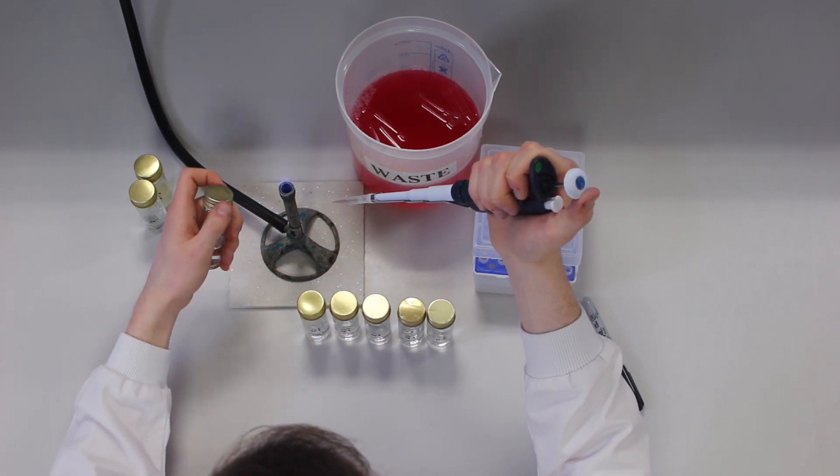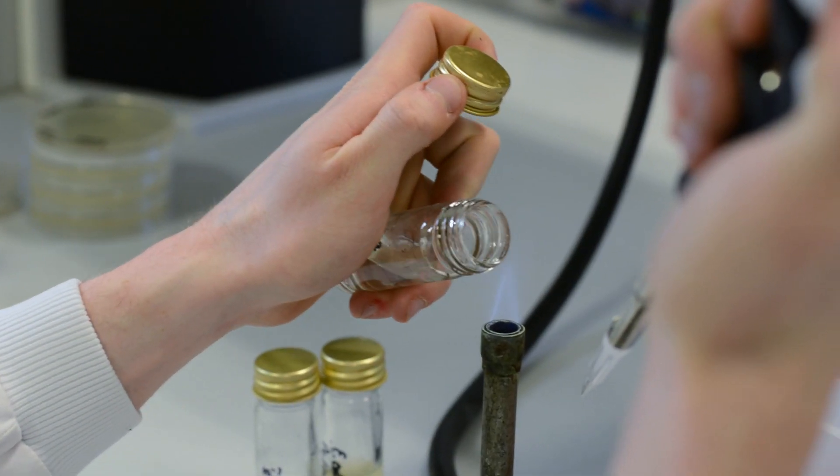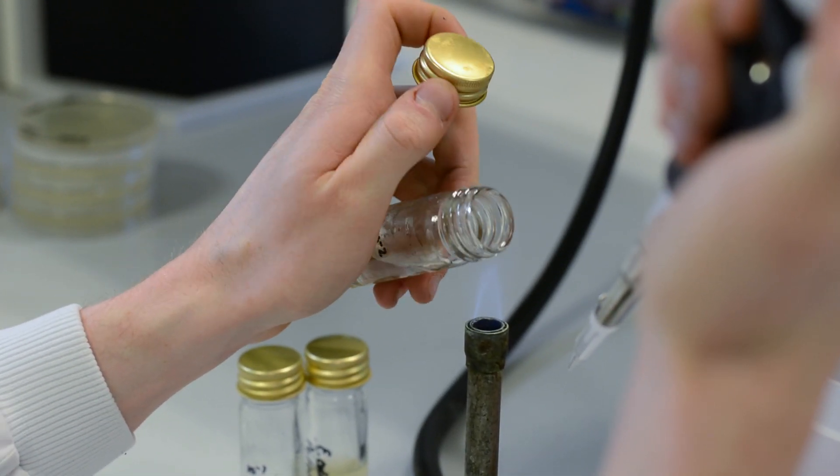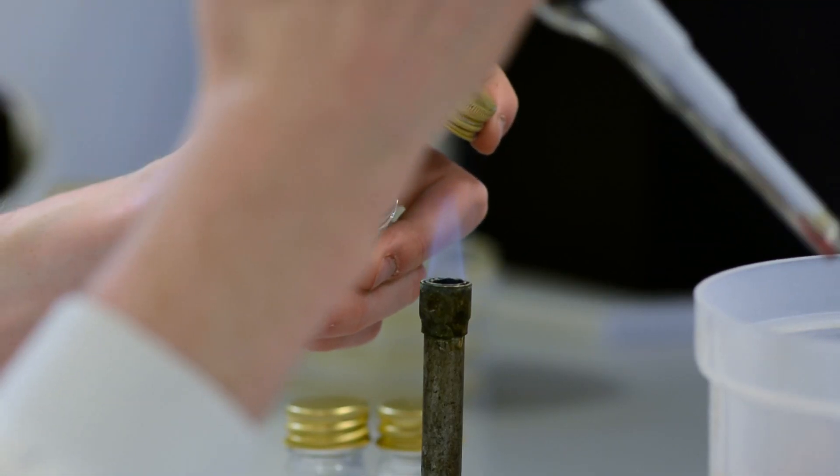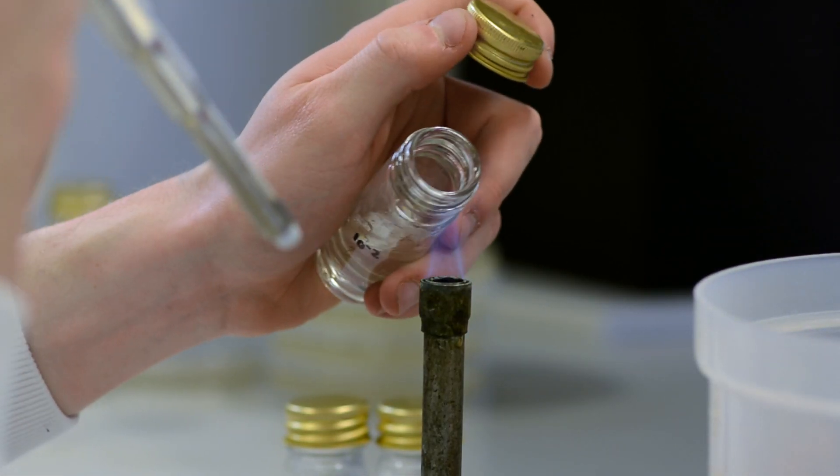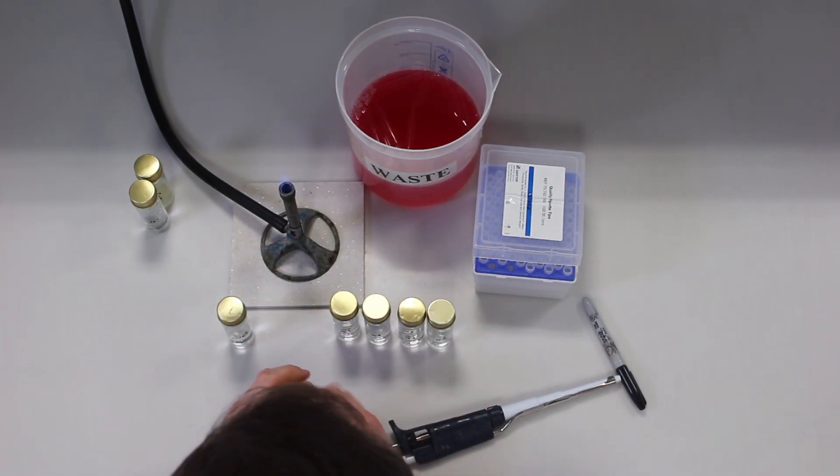Take the bottle of Ringer's solution labeled 10 to the minus 2, remove the lid, flame the neck of the bottle and dispense the diluted sample into the liquid. Flame the neck of the bottle again and replace the lid. Discard the pipette tip into the waste.